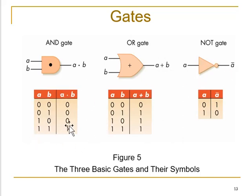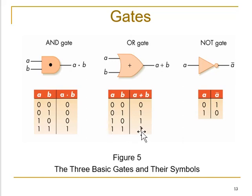Looking at the truth tables — for an AND gate: 0,0 gives 0; 0,1 gives 0; 1,0 gives 0; 1,1 gives 1. For an OR gate: 0,0 is 0; 0,1 is 1; 1,1 is also 1. When we talk about the NOT gate, it is the complement of the input. So if we have 0 at the input, the output will be 1. Vice versa, if you have binary 1 at the input, the output will be binary 0.